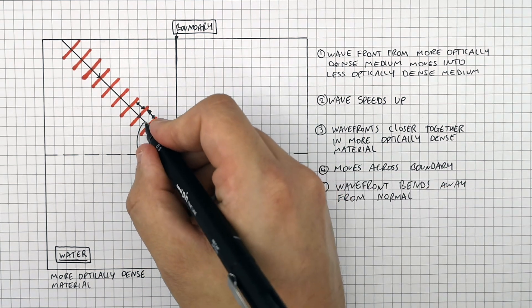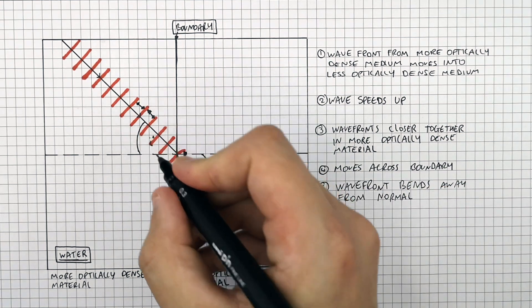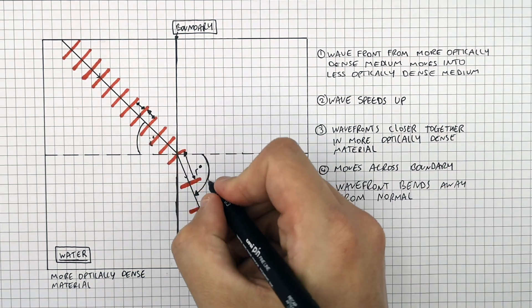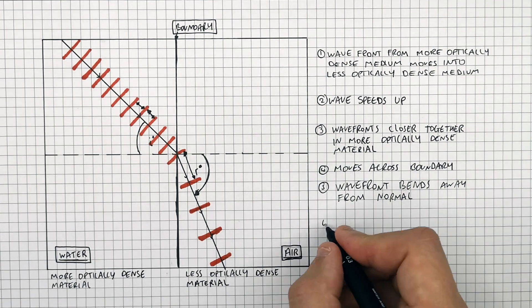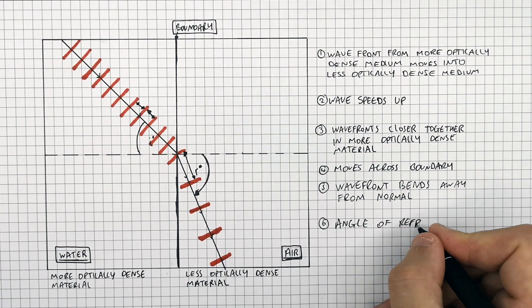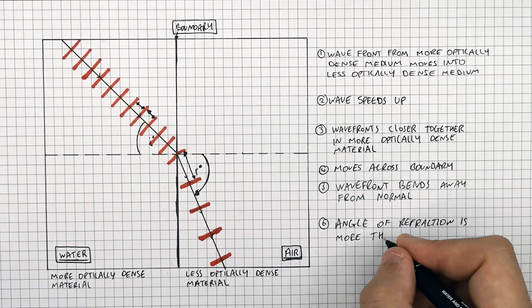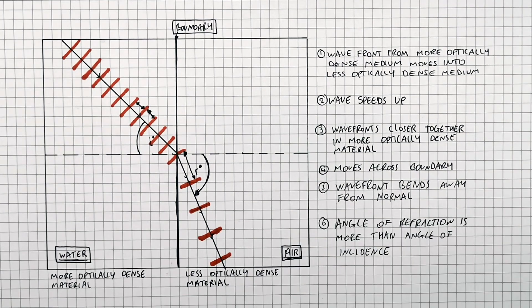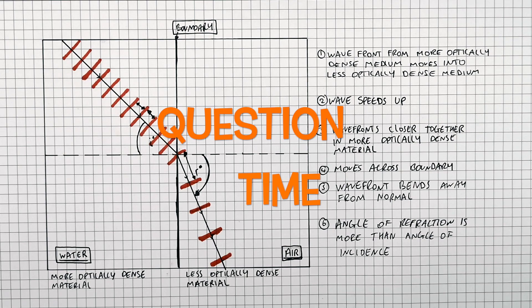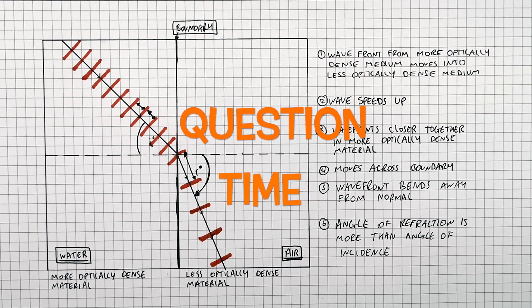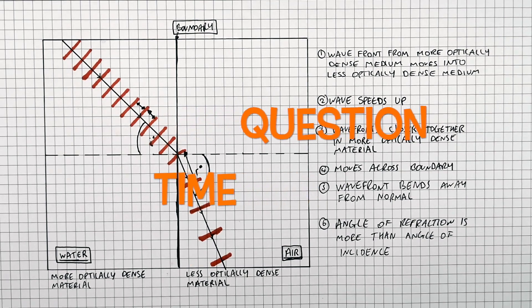The wavefront bends away from the normal. The angle of refraction is larger than the angle of incidence. It's question time — attempt these questions to check your understanding.